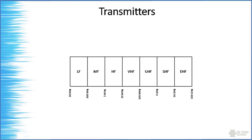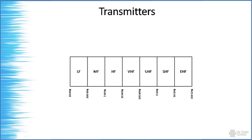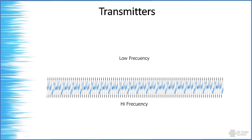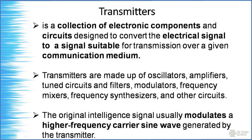AM broadcast uses medium frequency. For example, DZBB at 594 kHz — that means 594 kilohertz — carries voice or music on that carrier. For FM, for example 96.3 WRR is 96.3 megahertz. The high-frequency carrier signal is generated by the oscillator, then amplified, then passed through the modulator, and transmitted via an antenna.